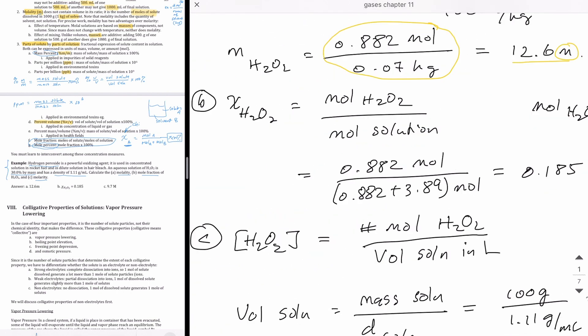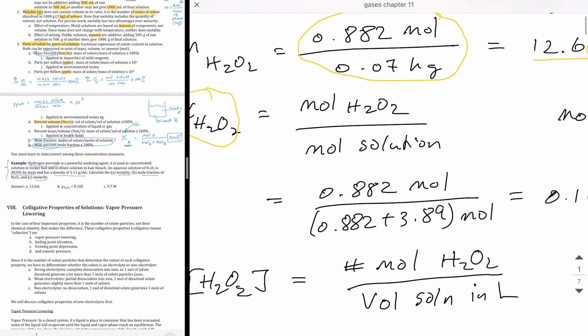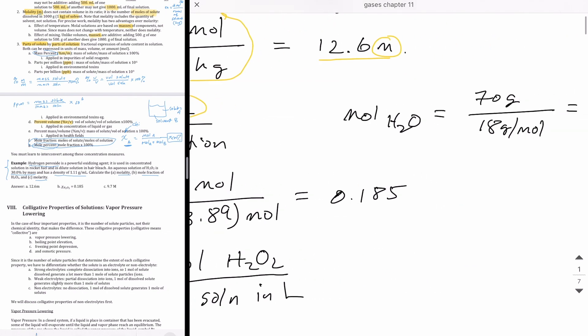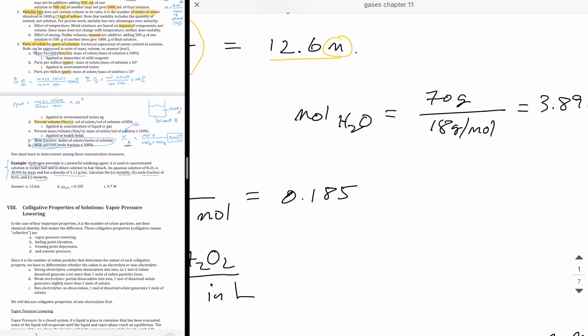The next thing that we're asked is the mole fraction of H2O2. Here, I'm going to need to take the moles of H2O2 divided by the moles of solution, which is the moles of H2O2 plus the moles of water. So I'm first going to calculate the moles of water, which is my solvent.